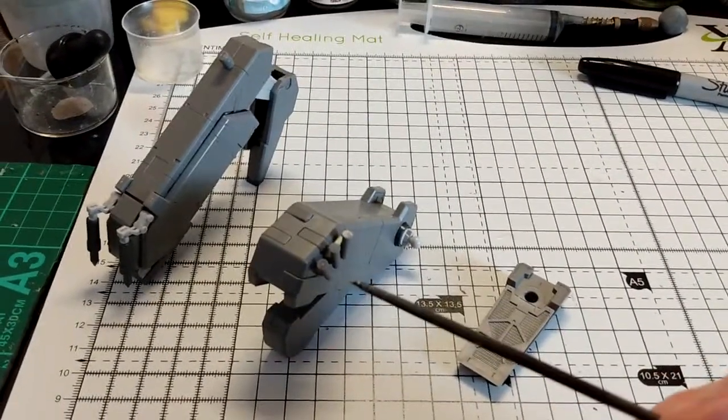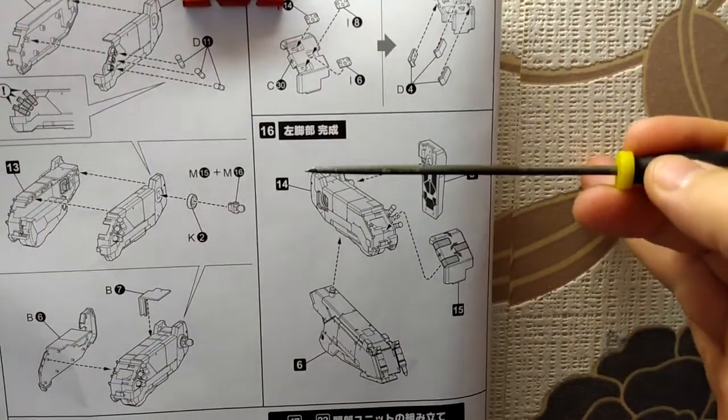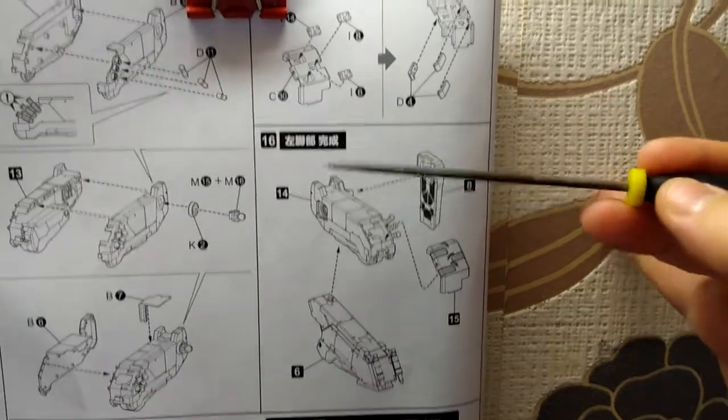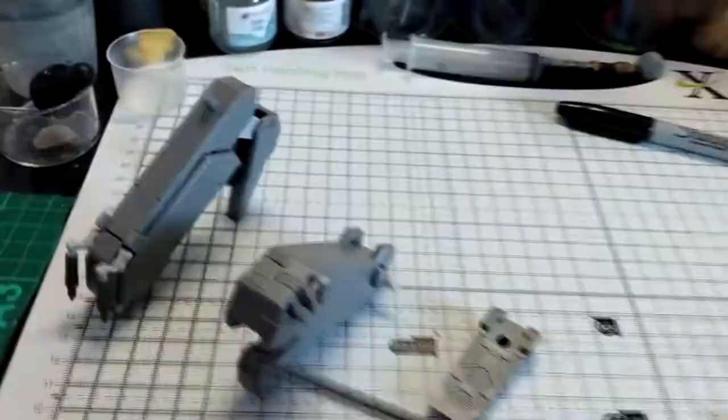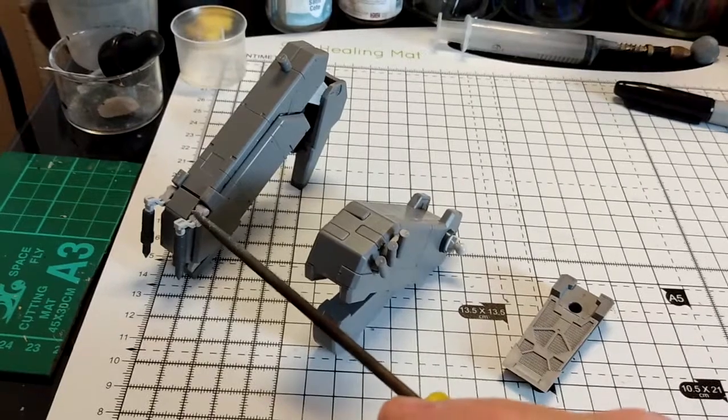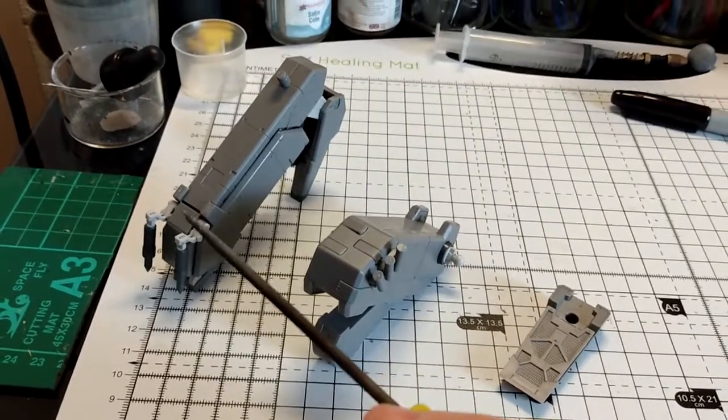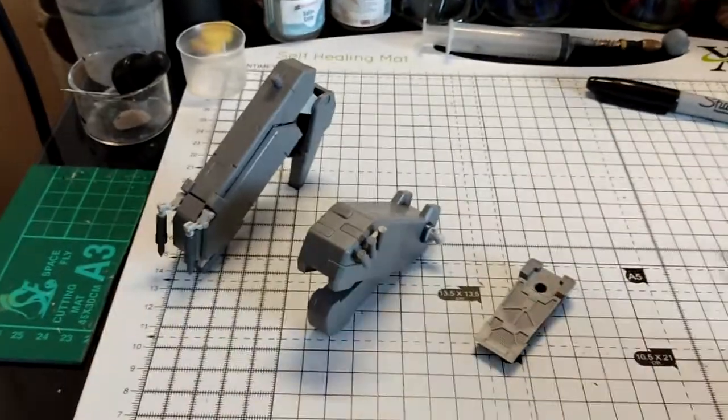So now going on to step 16, which is a rinse and repeat of step 12 for the right leg. Step 16 is for the left leg, so you've got all the three parts there. I've temporarily mounted the claws onto the foot of the lower leg, so now all these are ready to be mocked up together.